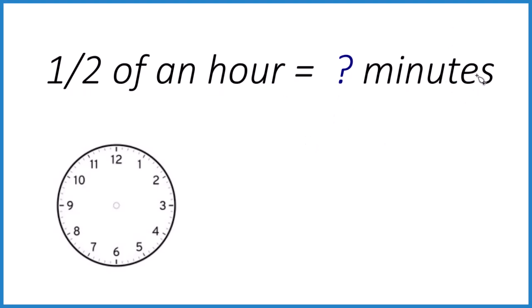So we know that one hour is 60 minutes, and we want half of that hour. So we're going to take one half times 60 minutes, and that'll give us our one half of an hour in minutes.